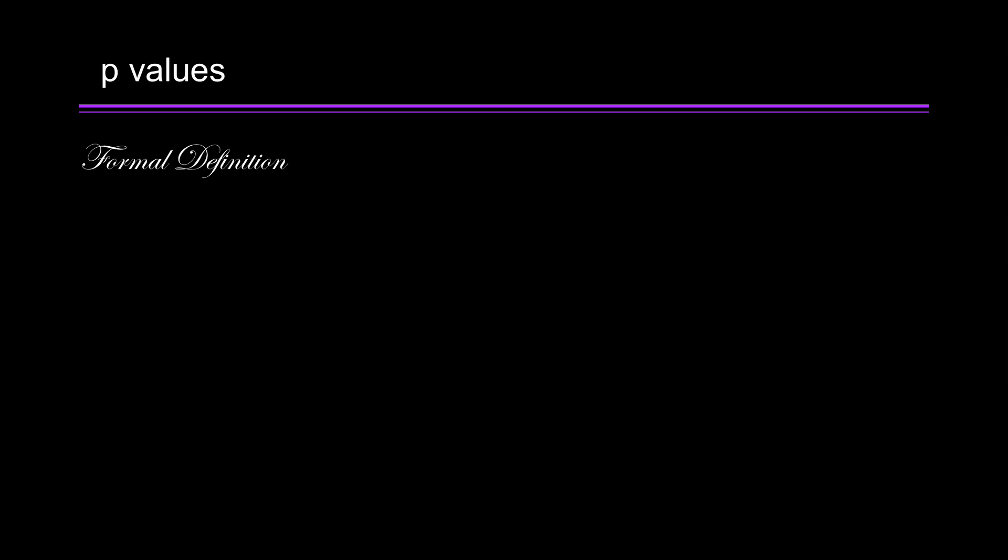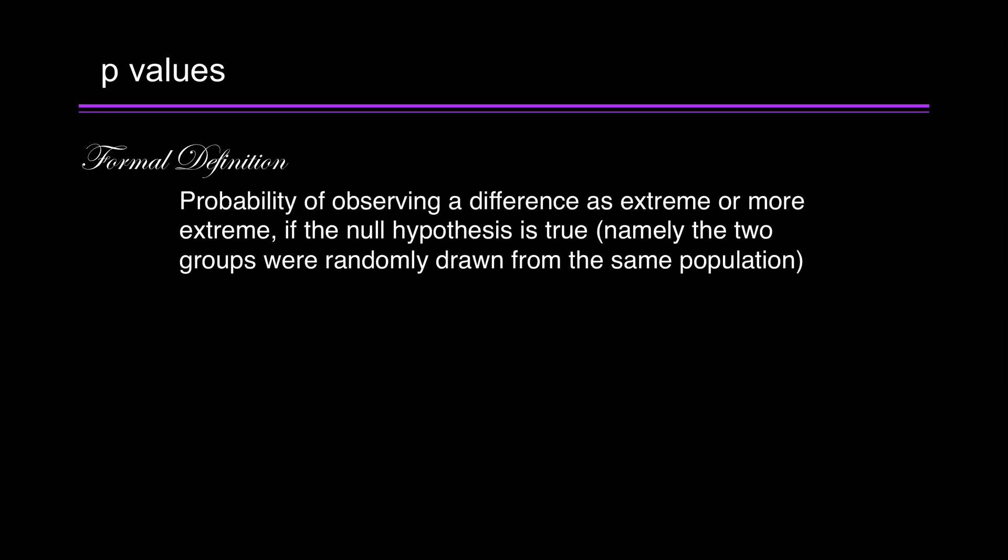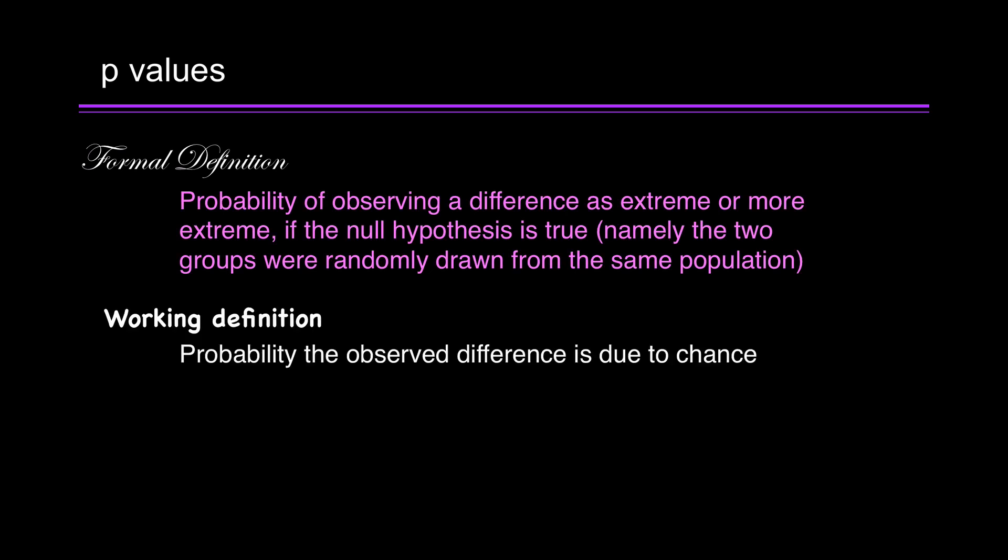The formal definition of a p-value is this. The probability of observing a difference as extreme or more extreme if the null hypothesis is true, namely that the two groups were randomly drawn from the same population. Now the working definition is the probability the observed difference is due to chance. Now that gives some statisticians fits, but I think it's a reasonable working definition.